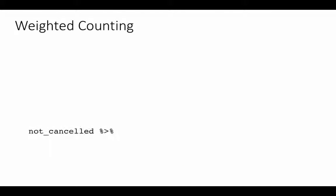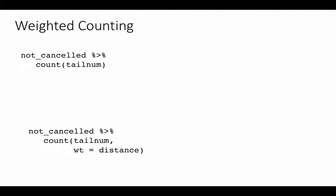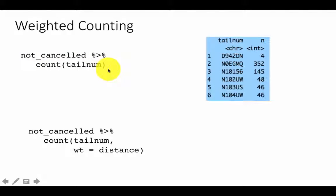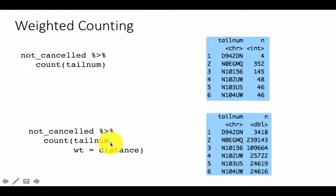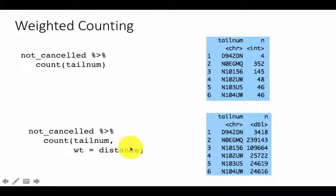You can also do weighted counting. For example, take not-cancelled flights and count by tail number — that tells you how many flights each aircraft flew. But you can weight this by distance to find the total distance flown by each aircraft: count(tailnum, wt = distance). This is equivalent to summarizing and summing the distance. The weight means every time the aircraft flies, its distance becomes the weight — so it's a weighted count that totals the distance values.